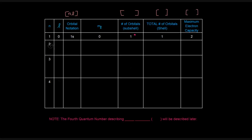For n equals 2, the possible l values are 0 and 1. L equals 0 gives the 2s orbital, with m sub l equals 0 — just 1 orbital. L equals 1 gives the 2p orbitals, with m sub l values of negative 1, 0, and positive 1 — that's 3 orbitals. The total number of orbitals in the n equals 2 shell is 1 plus 3 equals 4, and the maximum electron capacity is 4 times 2 equals 8.